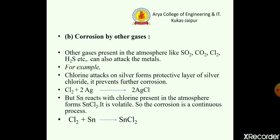The second type of dry corrosion is corrosion by other gases. According to this, if other gases are present in the atmosphere, like SO2, CO2, Cl2, or H2S, they can also attack the metal surface.